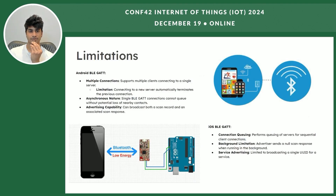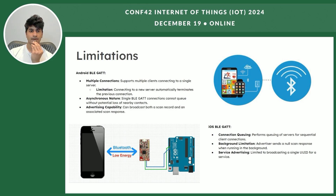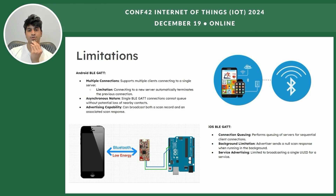Now let's get to the limitations of this technology. On Android, multiple clients can connect to a single server, but as soon as a client tries to connect to a second server, the first connection is terminated. Since connections are asynchronous, we will have to queue them, and this can result in potential loss of nearby devices. However, Android can broadcast two IDs as part of the scan record, even when the app is in the background or the screen is locked, and the scan response will also work properly when the app is backgrounded.